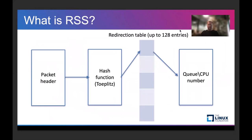Diving into the classification itself — depending on the packet type, the hash function operates on the packet header fields, for example destination and source addresses, and then the hash value is used as an index in the redirection table.